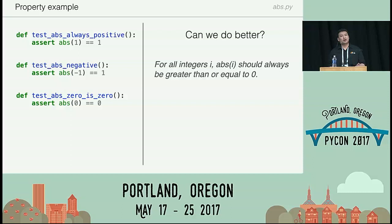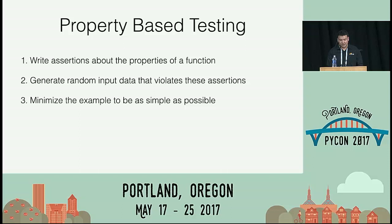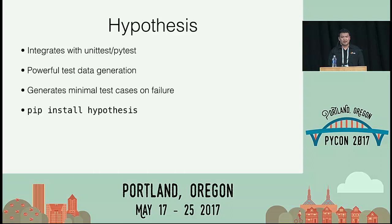Instead of a specific instance like the integer three, you might make a statement that says for any integer you can throw at this function, it should return a value that's greater than or equal to zero. This is what we mean by properties. In almost any case, there's always some sort of property you can assert about your test. If we wanted to do this ourselves without a framework, we could just pick a bunch of random numbers, call the function, and double-check that the value is greater than zero.